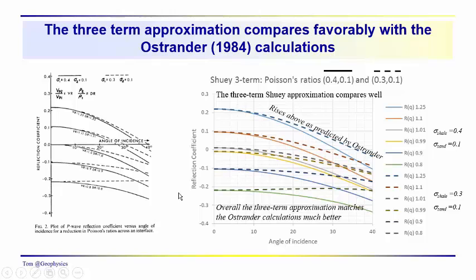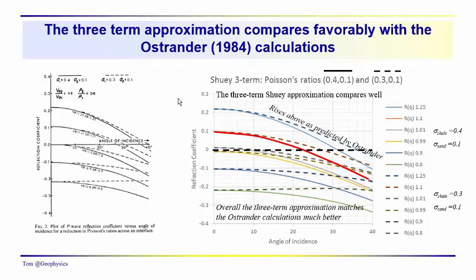Ostrander bases his results on COFID, which incorporates Poisson's ratio and shows how amplitude variations vary as a function of Poisson's ratio — demonstrating that Poisson's ratio is an important term. The main takeaway is that we see a much better agreement with the three-term approximation compared to Ostrander's computations.